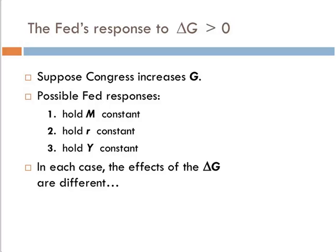Let's start with a little scenario. Suppose Congress increases government spending. There are three possible responses on the Fed's part: they could hold the money supply constant, they could keep interest rates constant, or they could keep income constant. In each case, the effects of the government spending change are different.